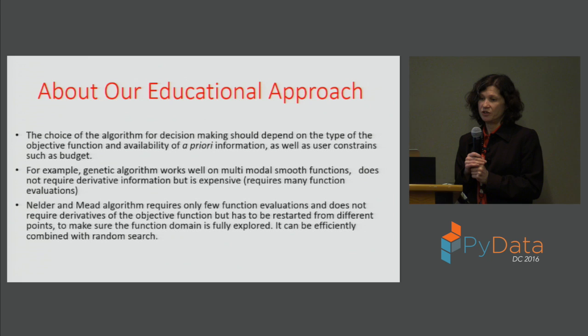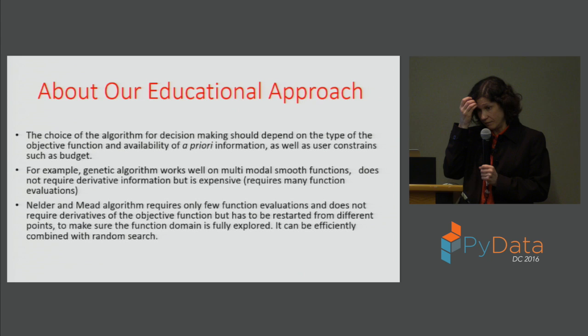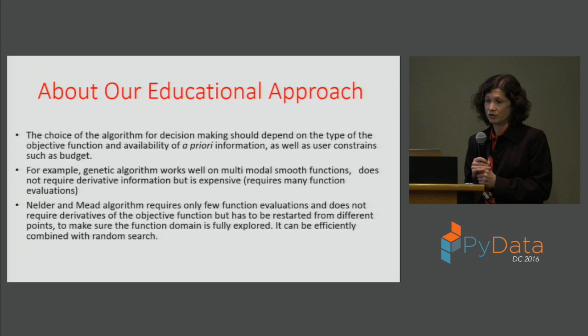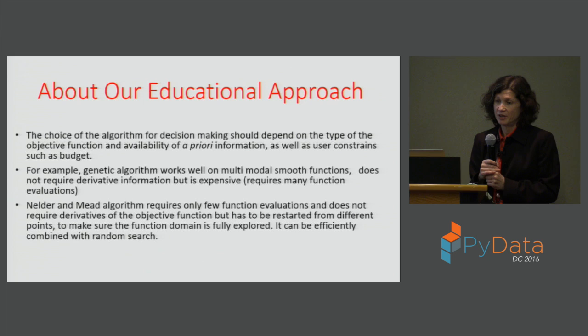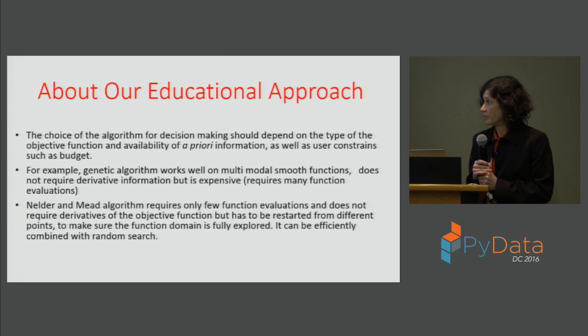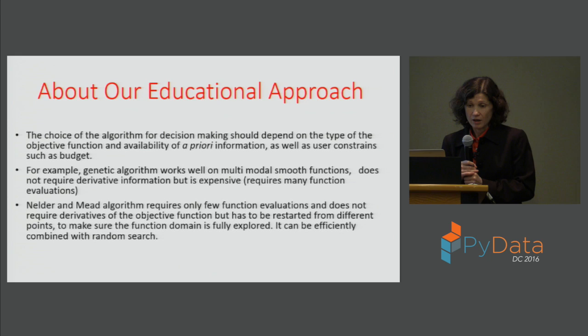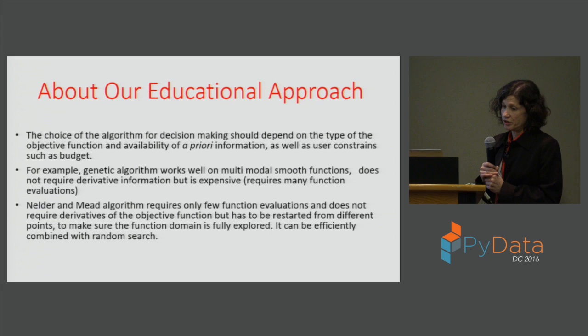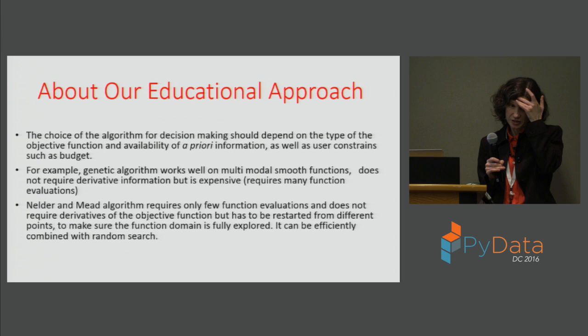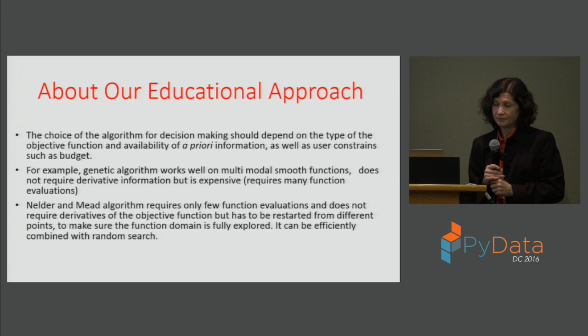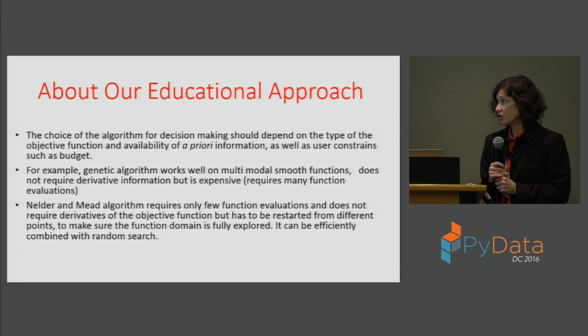The choice of algorithm for decision making should depend on the type of objective function and availability of a priori information, as well as user constraints such as budget. Genetic algorithms work well on multimodal smooth functions and do not require information about derivatives, but this algorithm is expensive to run because it requires many function evaluations. As opposed to the Nelder-Mead algorithm, which requires only a few function evaluations and does not require derivatives. However, Nelder-Mead is not really a global optimization method — it's non-local but not global — and it requires frequent restarts to search the whole domain.